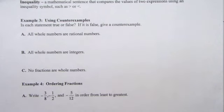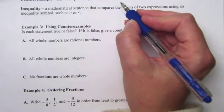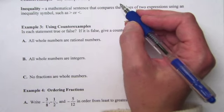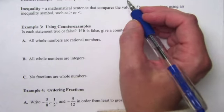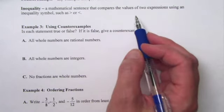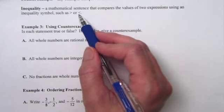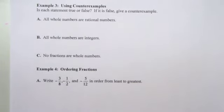Next we're going to look at some vocabulary. A counterexample is an example that proves that a statement is false — for instance, if someone says it is raining outside and you look and it's not raining, that's your counterexample. An inequality is a mathematical sentence that compares the values of two expressions using an inequality symbol such as greater than or less than. We'll put both of these vocab words to use in just a moment.